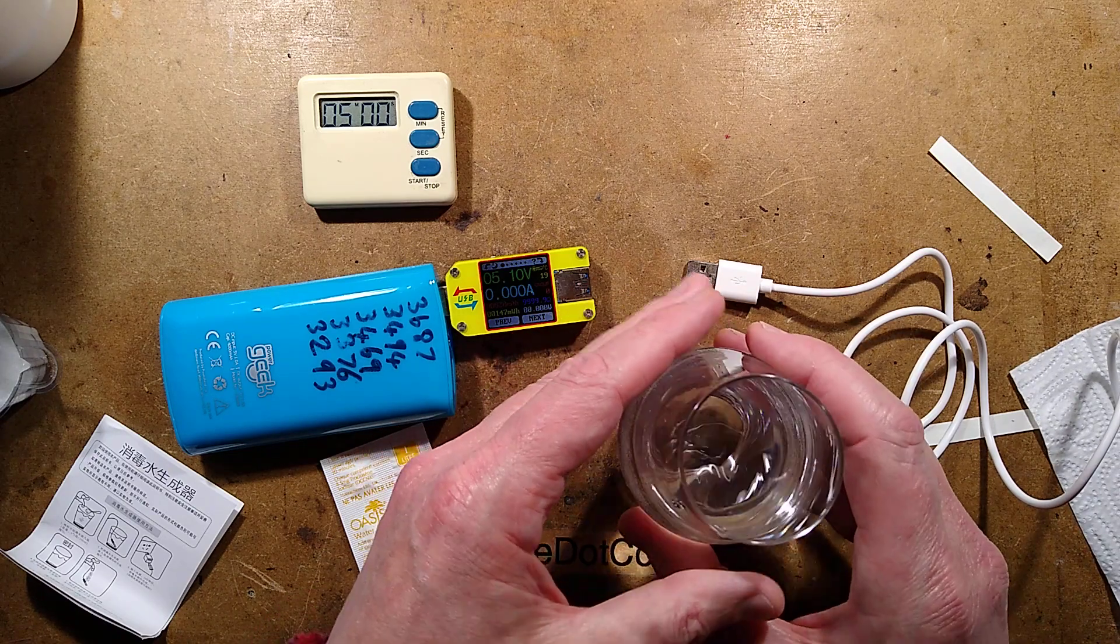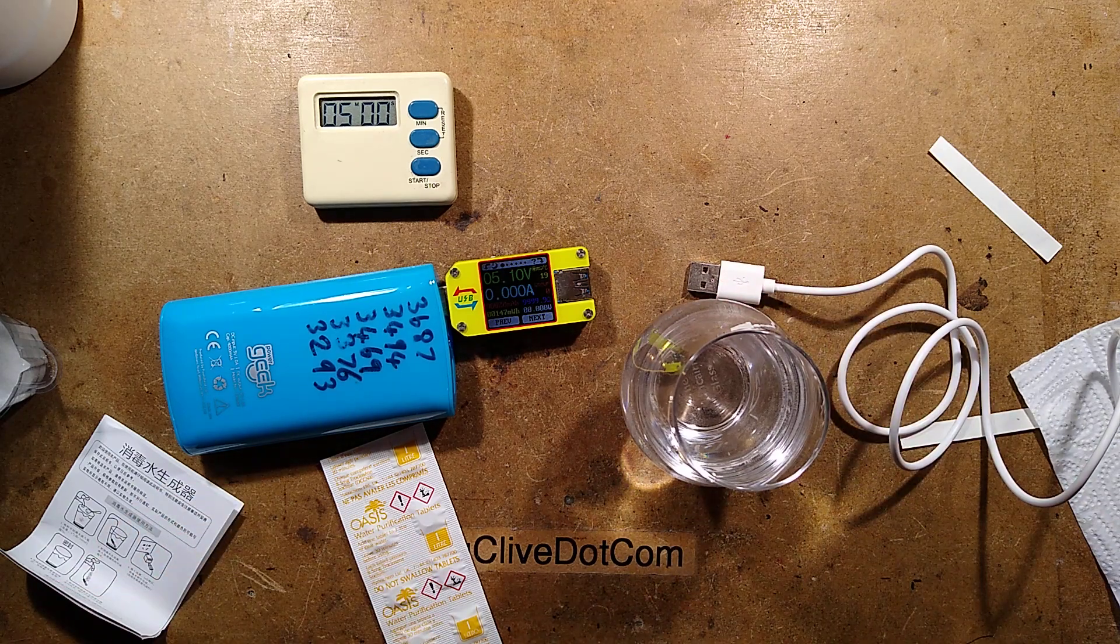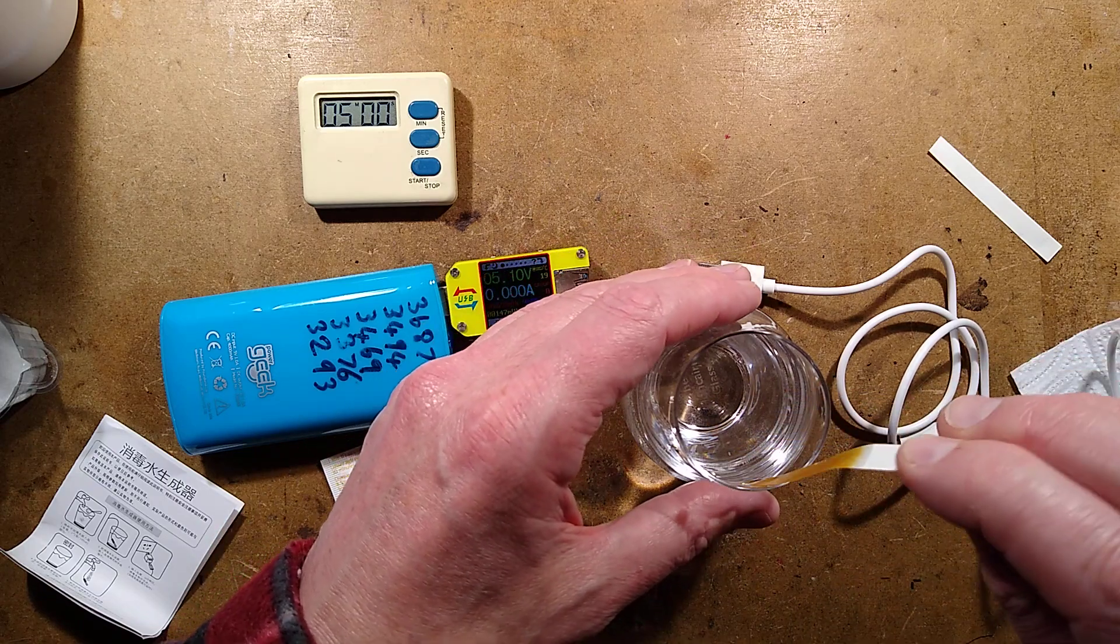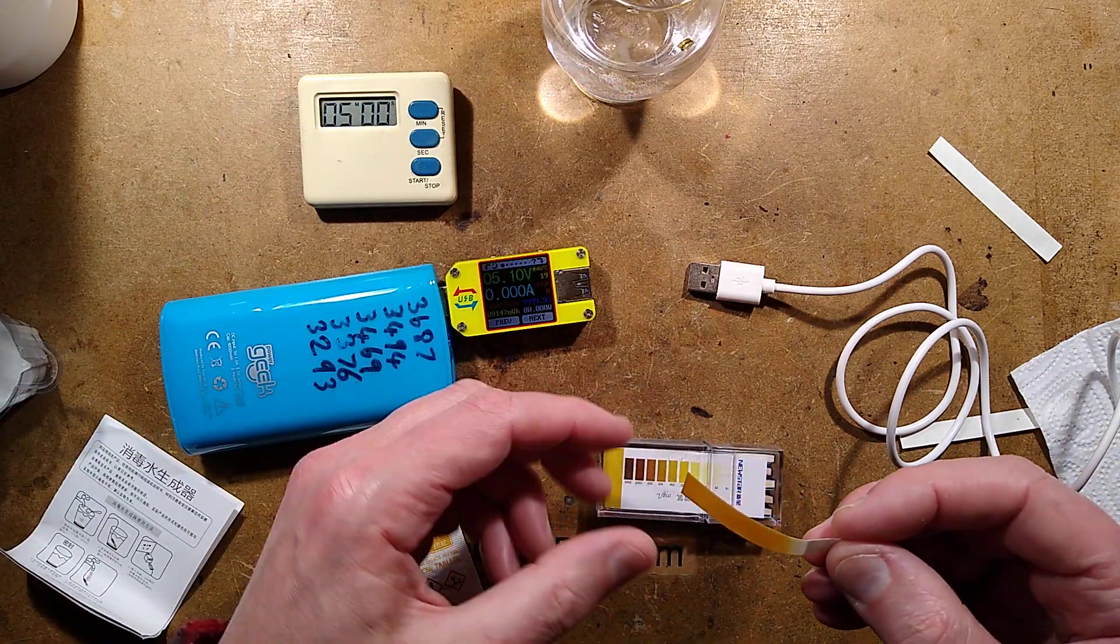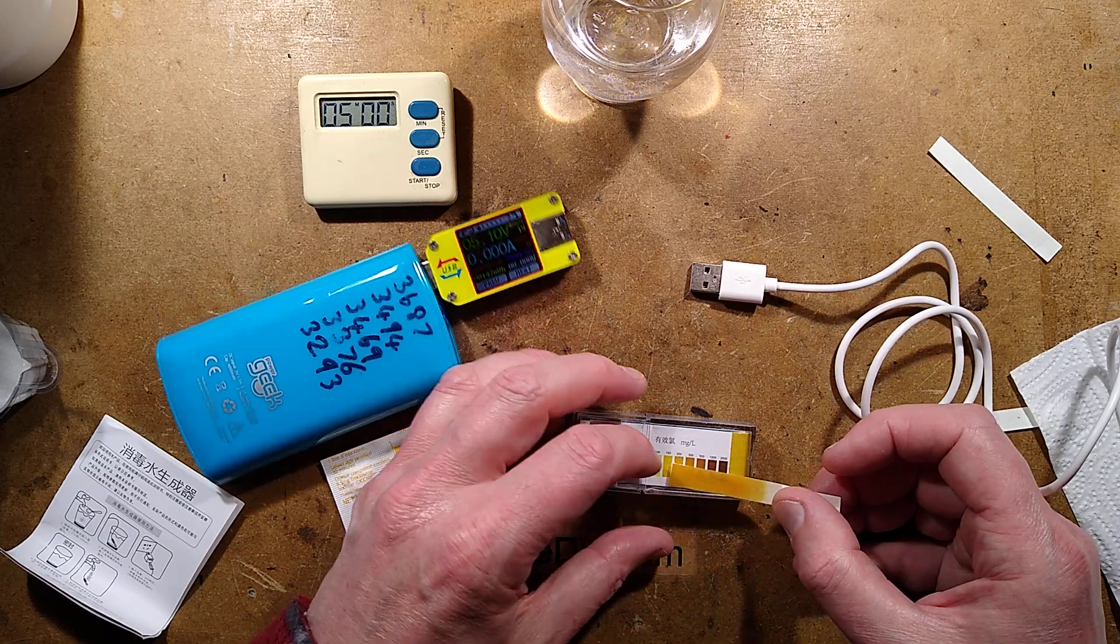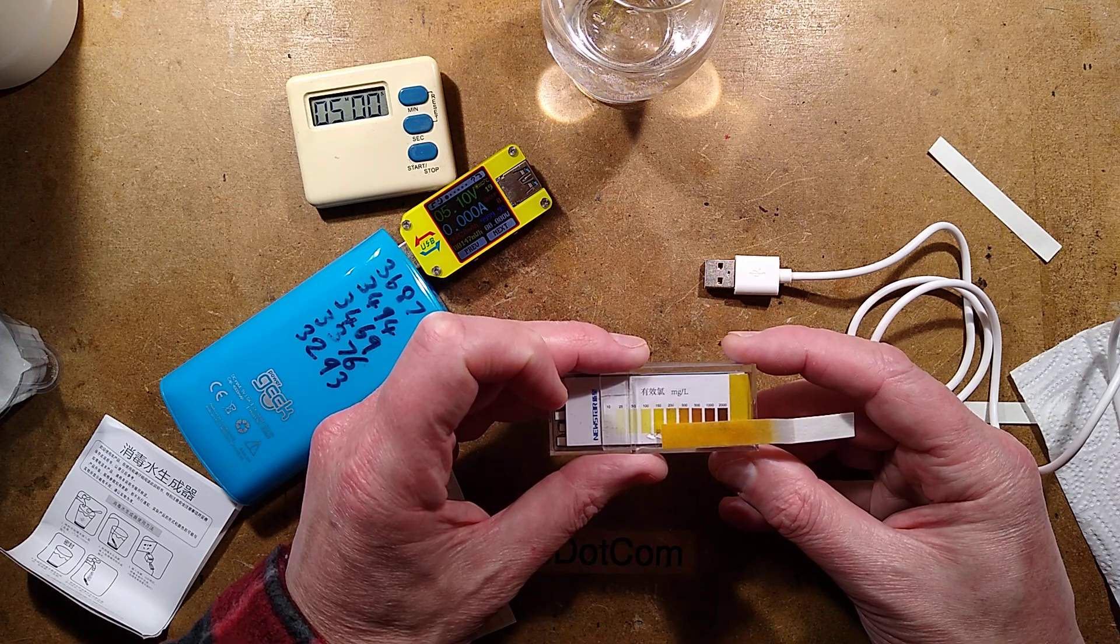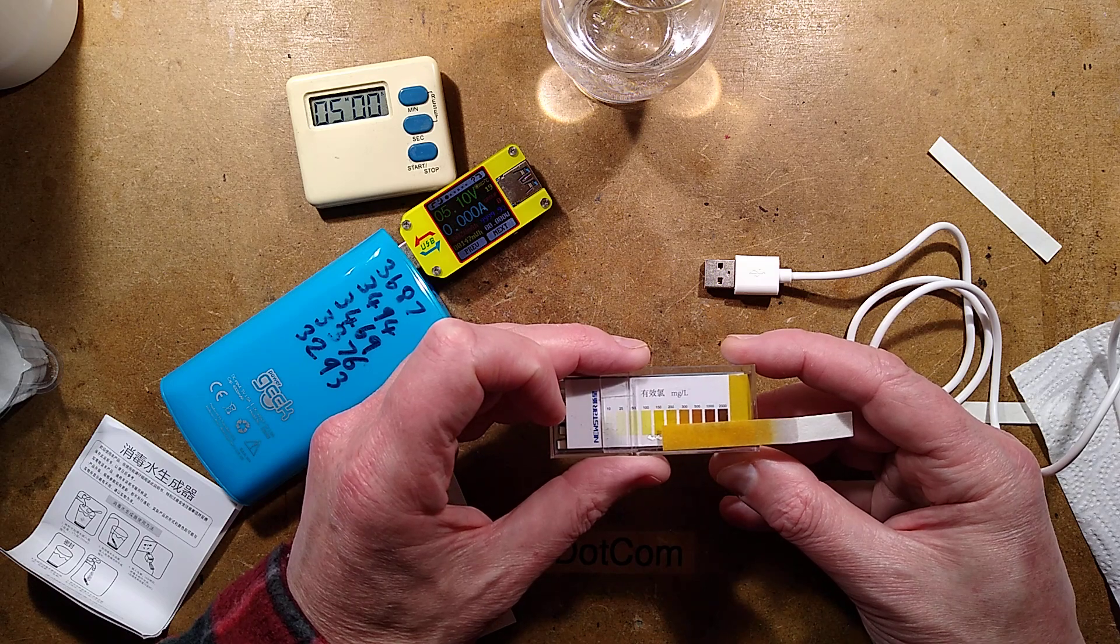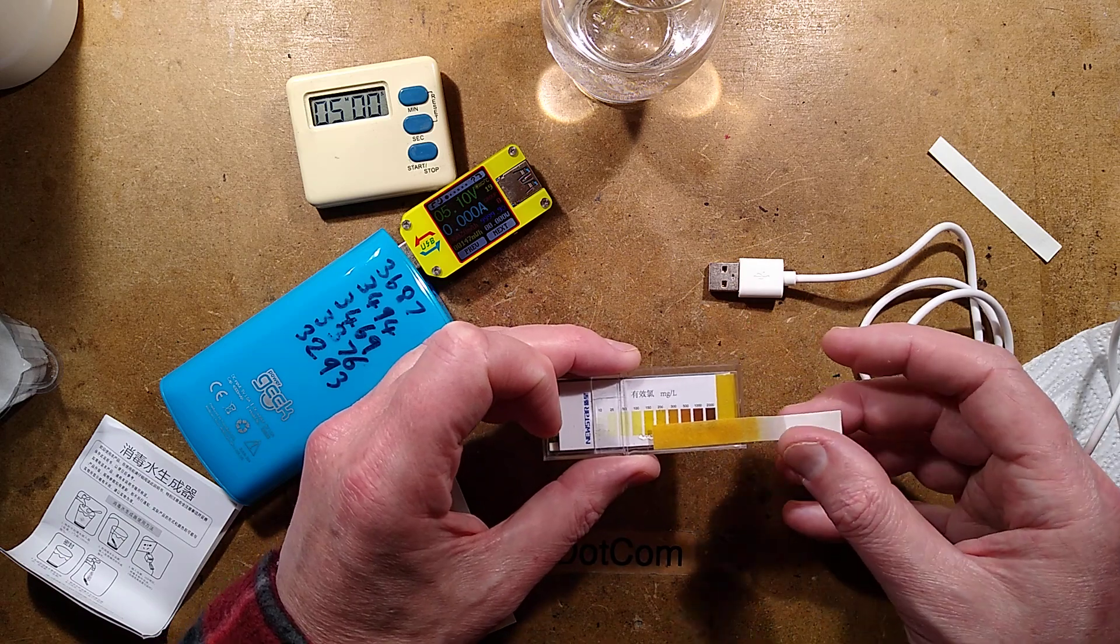So here is our liquid. Oh, that just smells like a swimming pool exploded. Let's put the strip in. That's a lot stronger. Okay, so let's see what this comes in at. Actually on there I would say it comes in at somewhere between 200 to 300, probably close to 300 milligrams per liter. Okay, that's quite strong.